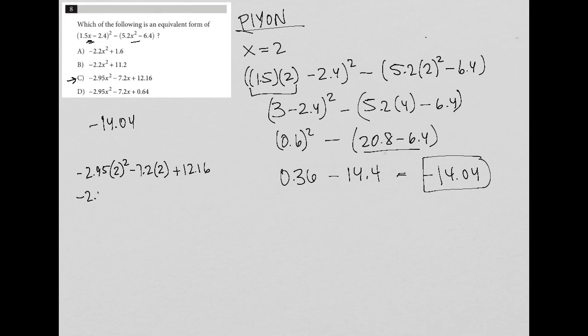This becomes negative 2.95 times 4. Negative 7.2 times 2 is negative 14.4, so plus 12.16.